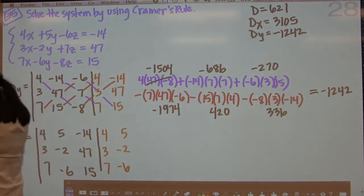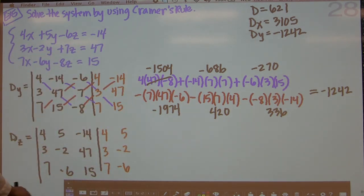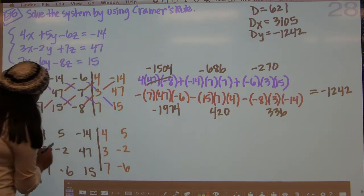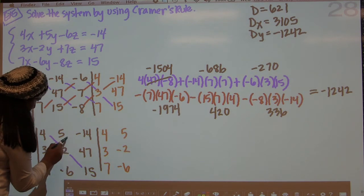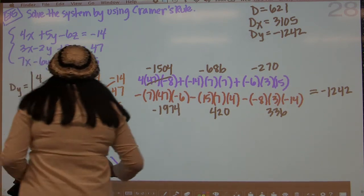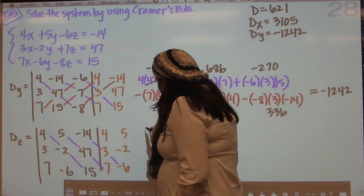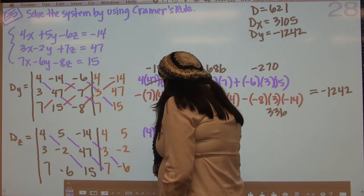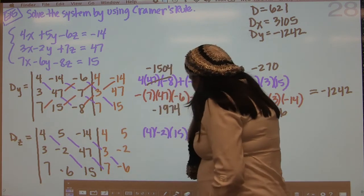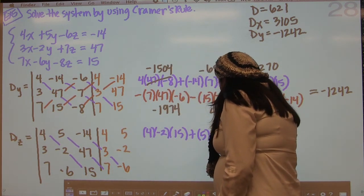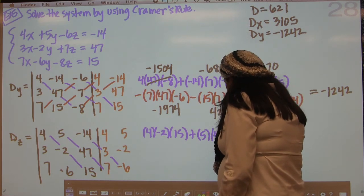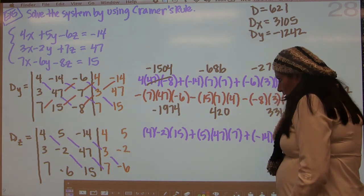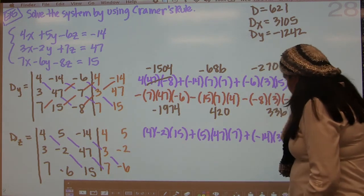All right. And now we have one more to do and then we can be on our way. So we'll do this last one. We'll do 4 times negative 2 times 15, then 5 times 47 times 7, and negative 14 times 3 times negative 6.